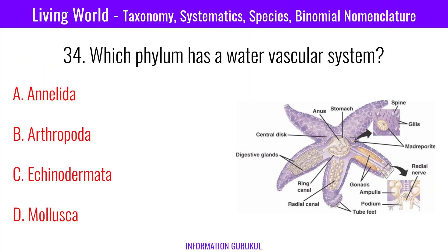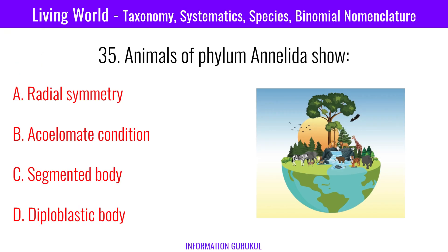Which phylum has a water vascular system? Echinodermata. Animals of phylum Annelida have a segmented body.